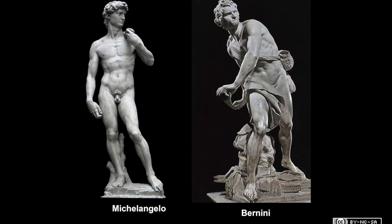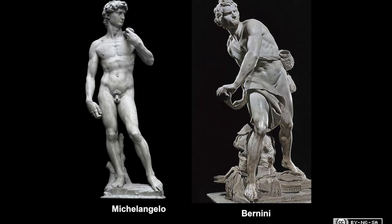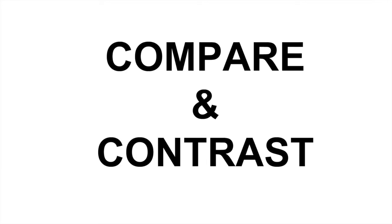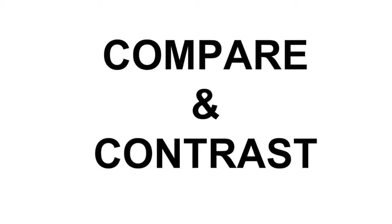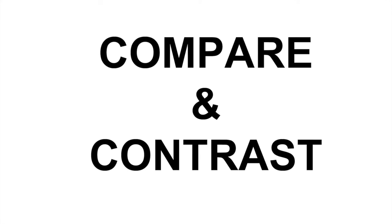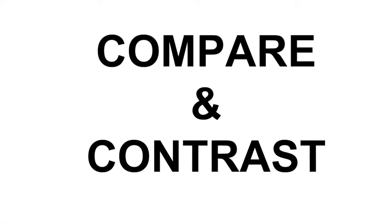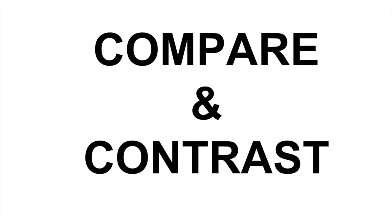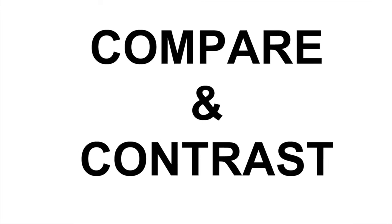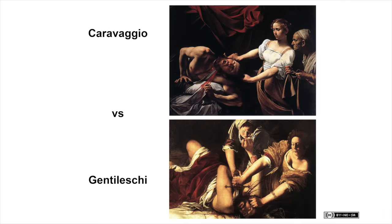It is important to realize that within the Baroque style of art there are different levels of movement, emotion, color, and naturalism. Two paintings that would be an interesting case for comparing and contrasting are Gentileschi's Judith Slaying Holofernes and Caravaggio's Judith Beheading Holofernes. While both paintings portray the same subject and are both quite gory and violent...